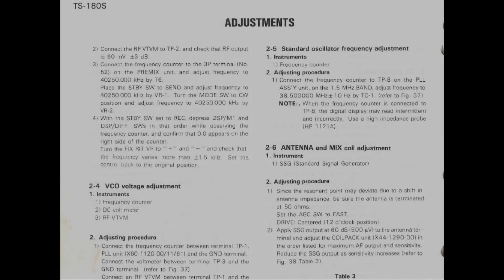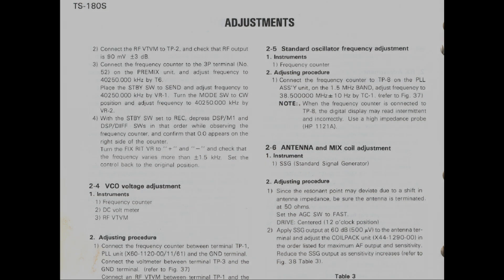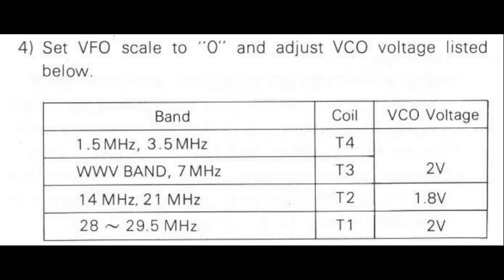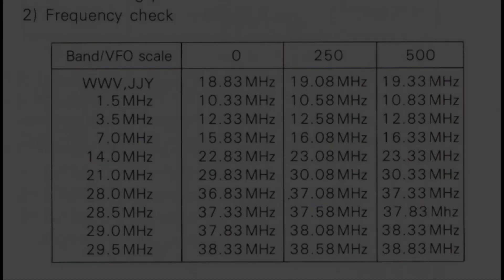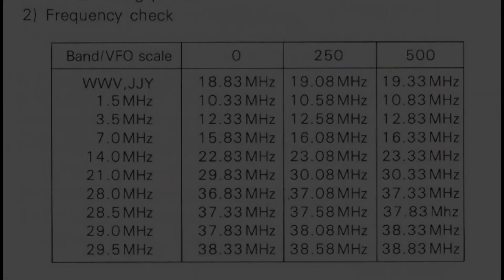New problems started to appear as soon as I reached the VCO voltage adjustment step. Basically, what we need to do is adjust some variable inductors named T1 to T4 until we see the correct voltage on a test point. Then check on another test point that we get an oscillating waveform at the correct frequency according to this table.